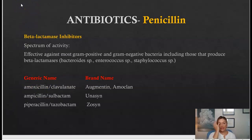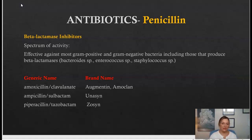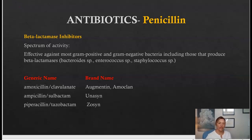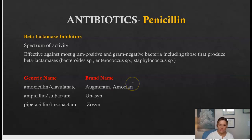The beta-lactamase inhibitors are also a type of penicillin, effective against most gram-positive and gram-negative bacteria — especially those that produce a beta-lactamase, such as enterococcus or staphylococcus. Generic names include amoxicillin-clavulanate (brand name Augmentin), ampicillin-sulbactam (brand name Unasyn), and piperacillin-tazobactam (brand name Zosyn). Unasyn and Zosyn are given IV and seen in the hospital; Augmentin is given orally and mostly used outside the hospital.